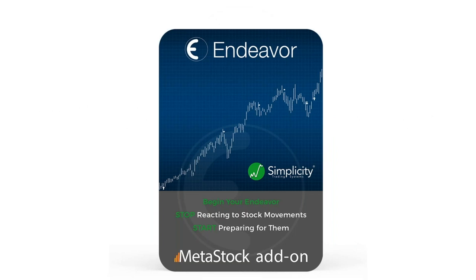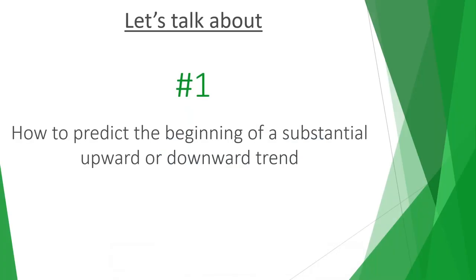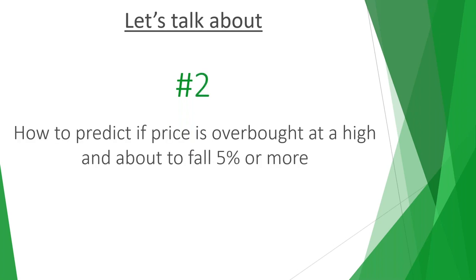We built Endeavor to do the hard work for you, including most of the technical analysis, which is what trips up most people. With Endeavor, you can simply and effortlessly identify the best stocks to trade. My goal today is to show you how Endeavor can help you do two very important tasks. Task number one: how to predict the beginning of a substantial upward or downward trend. Task number two: how to predict if price is overbought, at a high, and about to fall 5% or more.